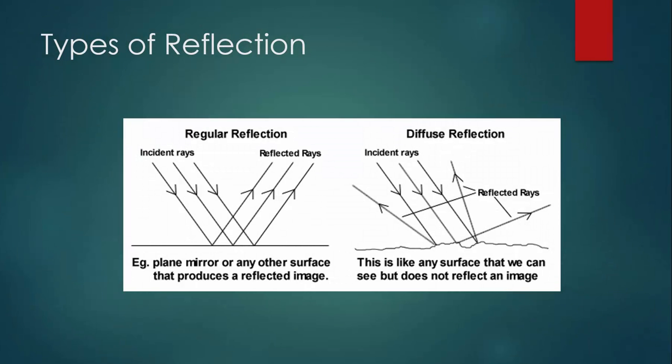There are actually two types of reflection. The first is what you normally think of when you think of reflection. We call this regular reflection. You can see that the incident rays that are striking the surface are parallel to each other, and so are the reflected rays. This is exactly what you get when you look at a plane mirror or any other surface that produces an image.